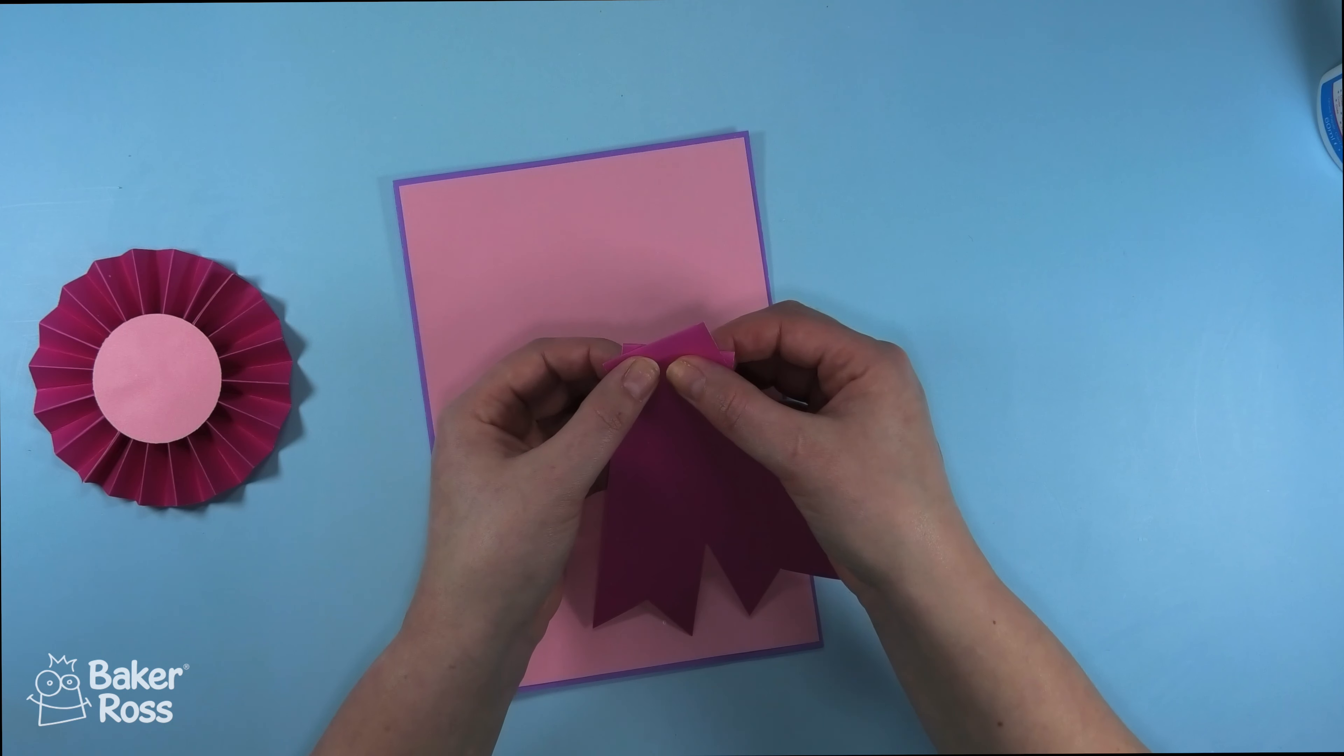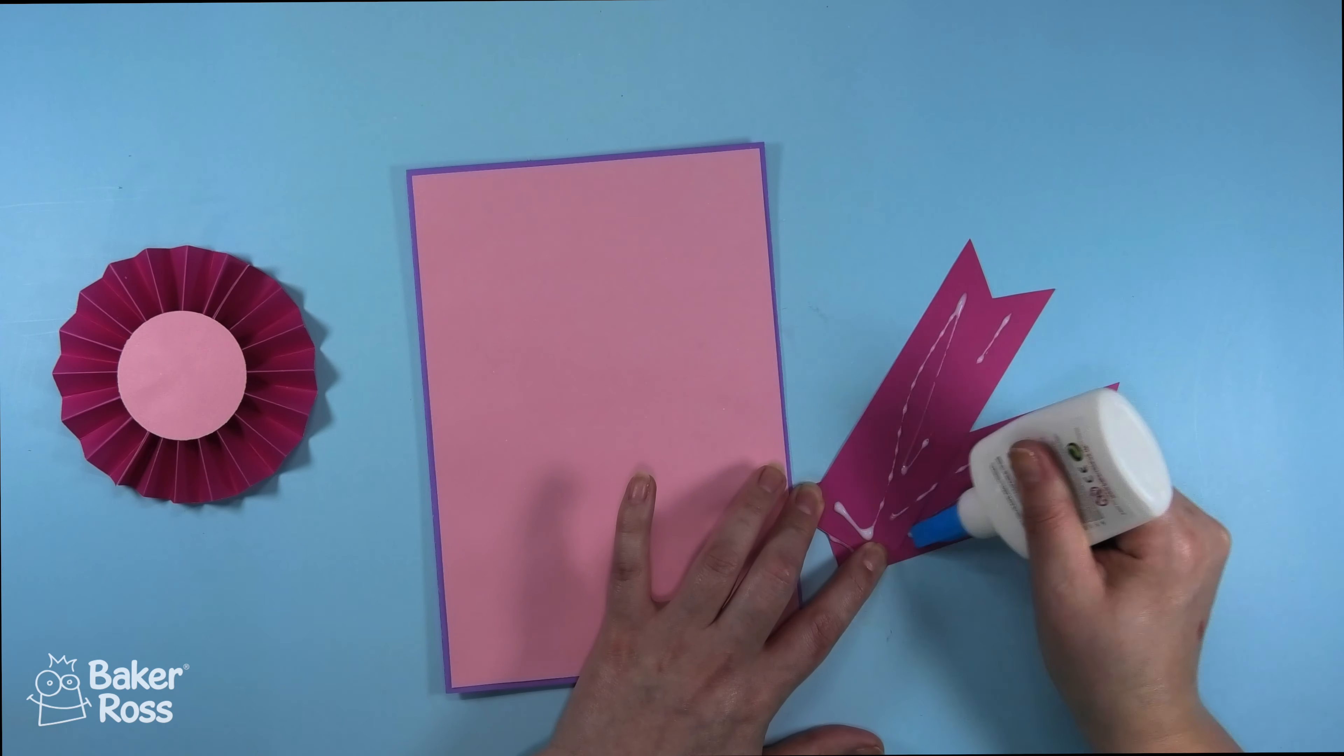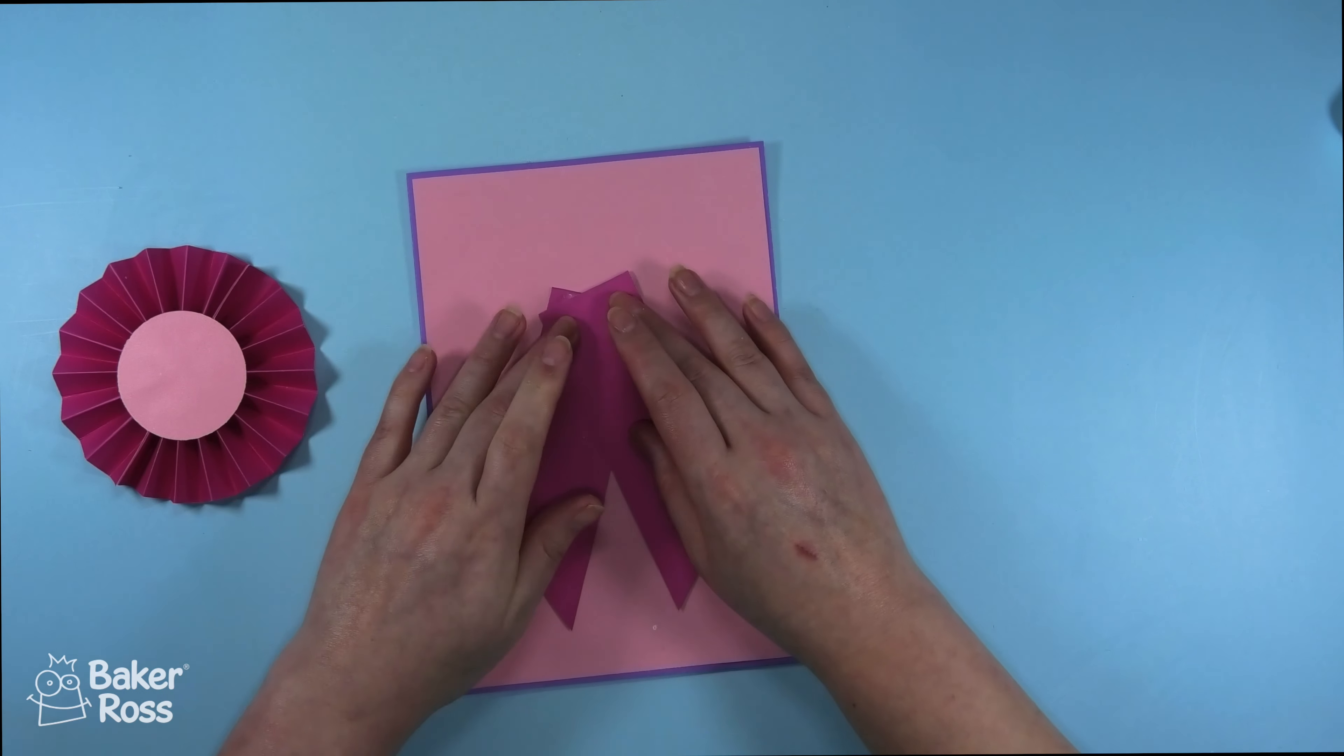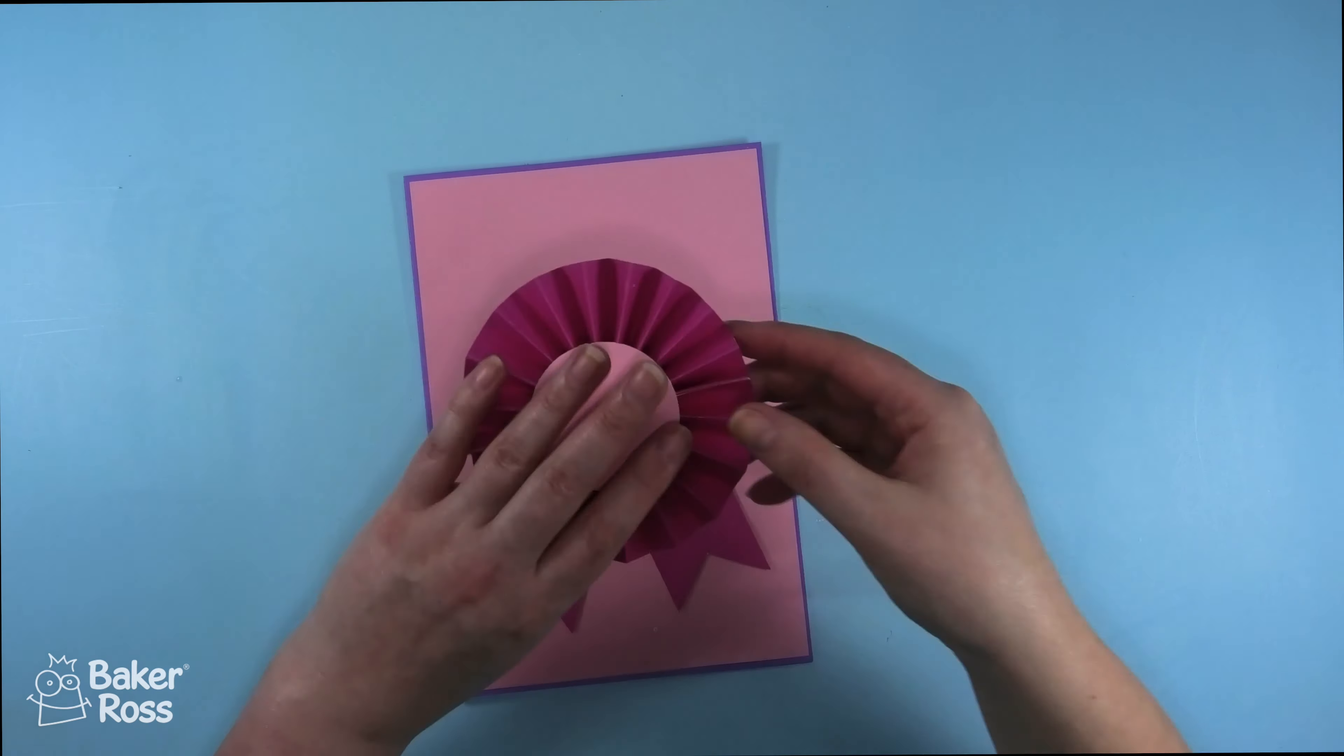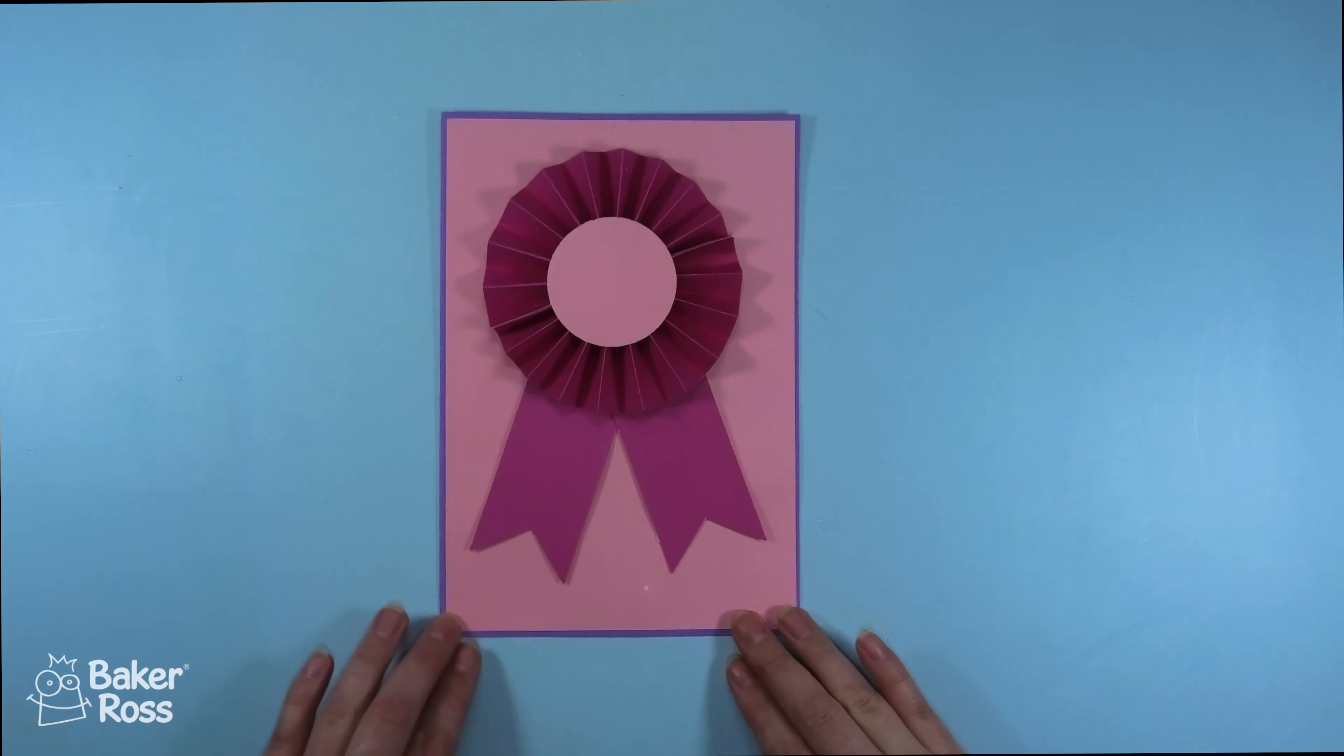I'll stick the two tails together at a slight angle and then I'll stick those down to the card base and then I'll just need to stick right on top of that my rosette piece. You can definitely change this up by using different colors. I think the pinks and the purples work really well together and I'm really pleased with how this one looks.